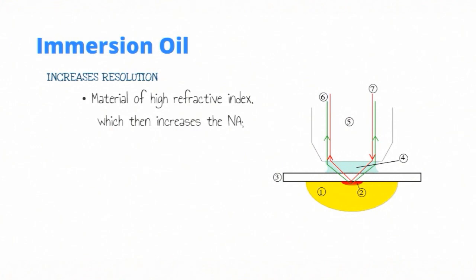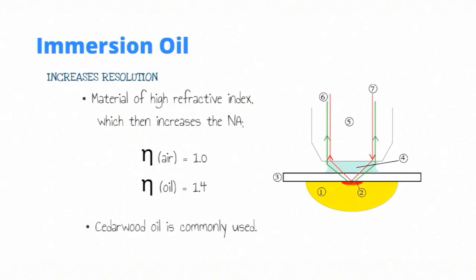For a quick comparison: the refractive index of air equals 1, while the refractive index of an oil is approximately 1.4. An example of an immersion oil commonly used in these cases is cedar wood oil.